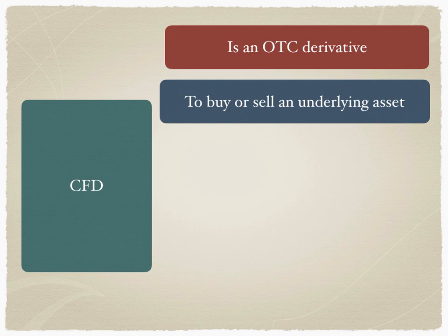The CFD is a contract to buy or sell an underlying asset. Since it is an OTC derivative, it is structured and designed to meet the requirements of the hedge fund. The hedge fund can initiate either a long CFD position, giving it the ability to buy the underlying asset, or a short CFD position, giving it the ability to sell the underlying asset.